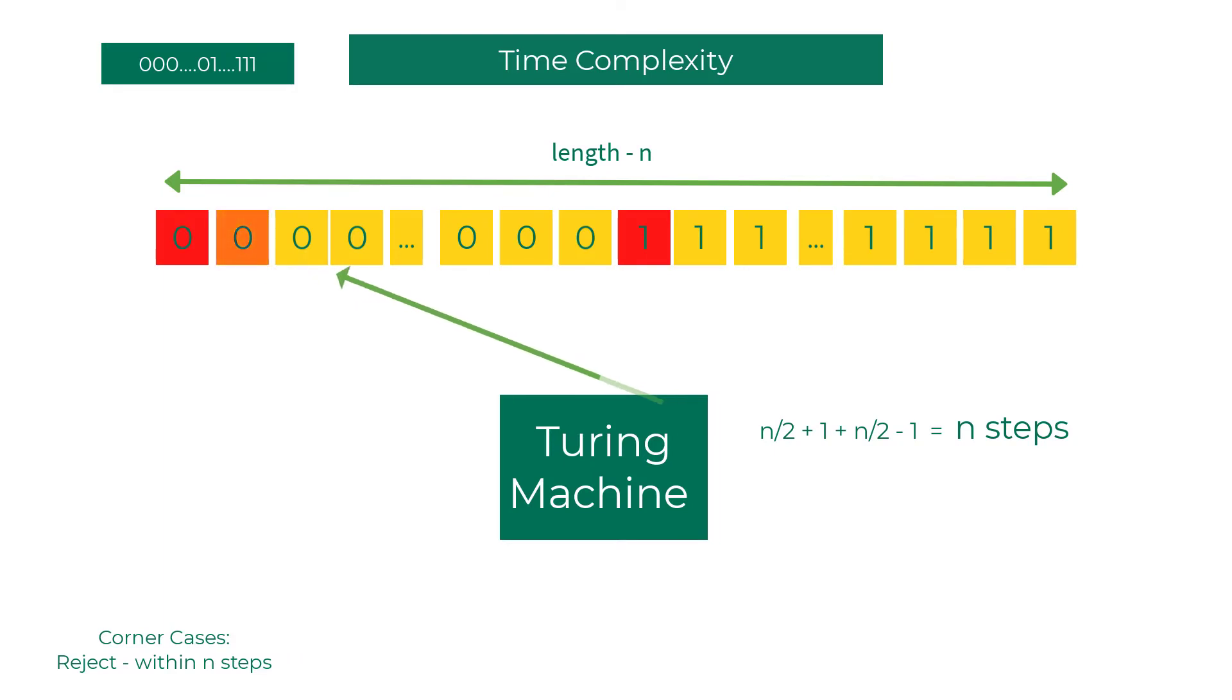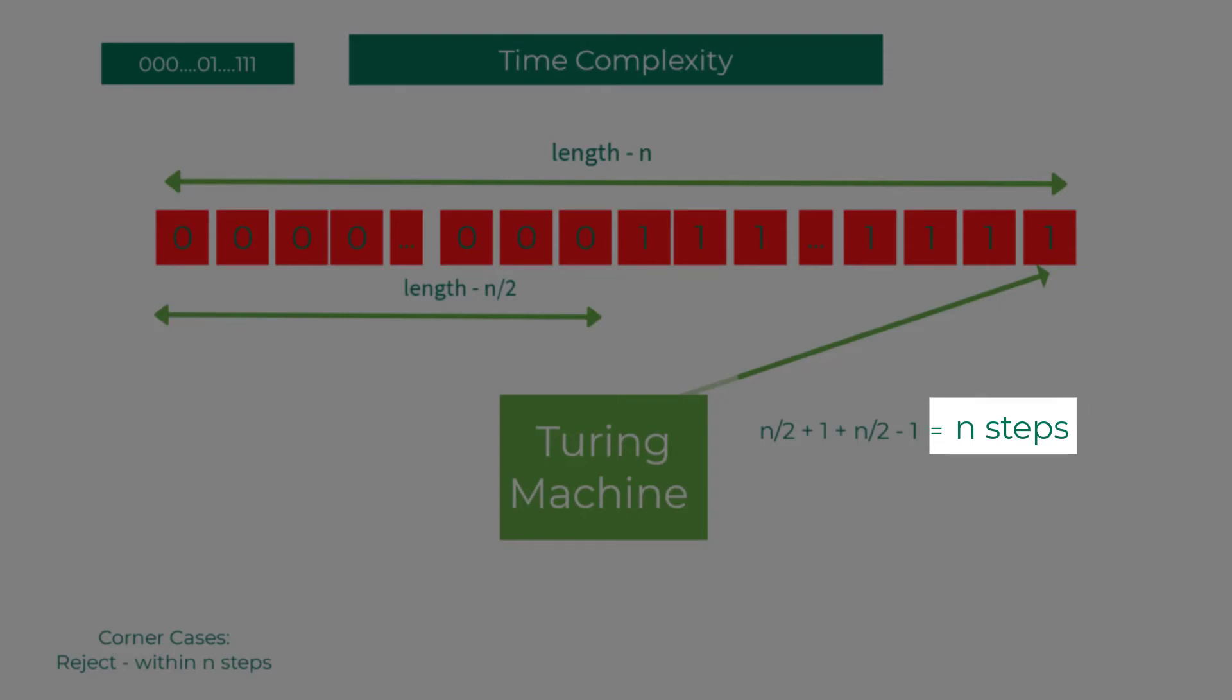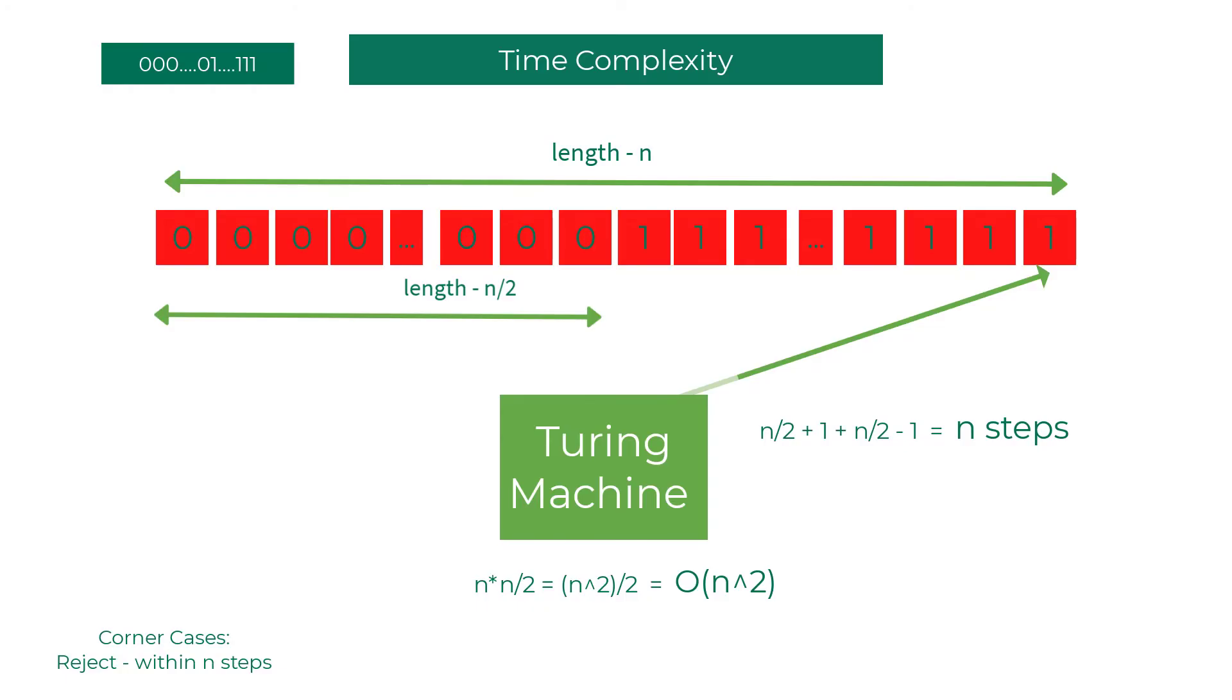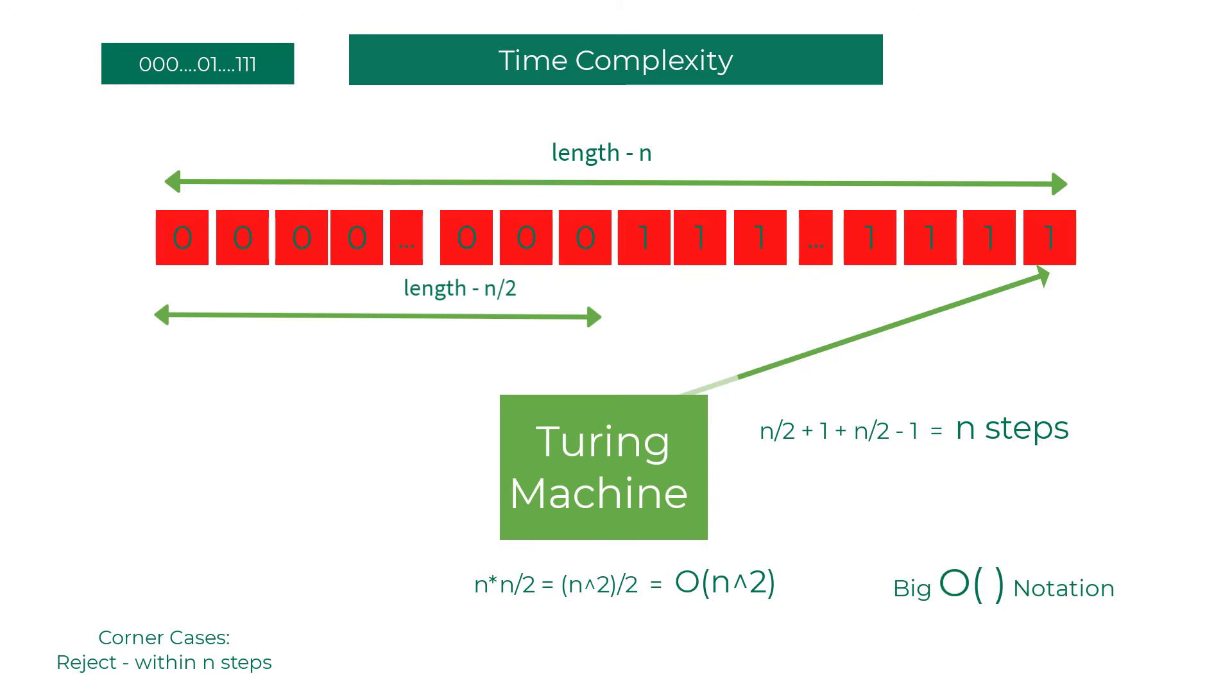We repeat this over and over till we end up with no zeros or ones. This only happens if the word is in that language. But if you have leftover ones or zeros, then you can reject it. Now let's count the number of steps. Each scan takes n steps, and then you're repeating that scan n by 2 times. So overall, you're running it in the order of n squared. So n multiplied by n by 2 is n squared by 2, which is big O of n squared. Now big O notation is a topic for another day, but think about it as the order - the highest order of n that actually defines the time complexity.